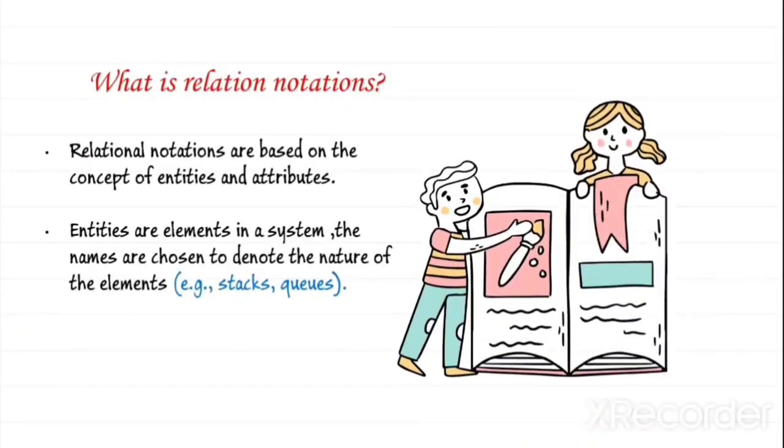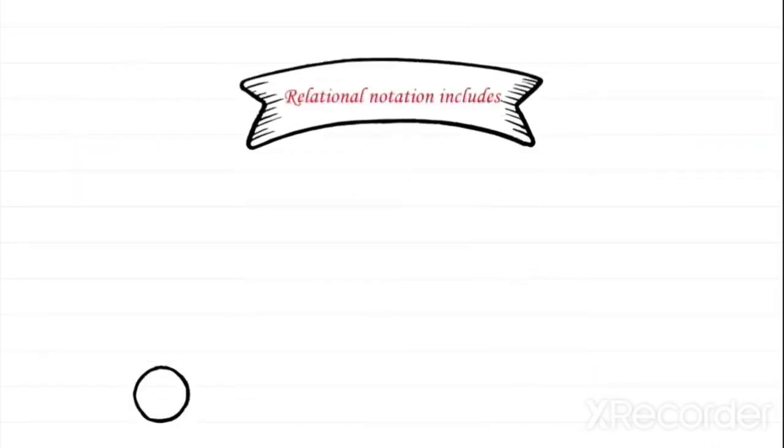Relational notations are based on the concept of entities and attributes. Entities are elements in a system. These names are chosen to denote the nature of elements, for example, stack and queues. Attributes are specified by applying functions and relations to the named entities.